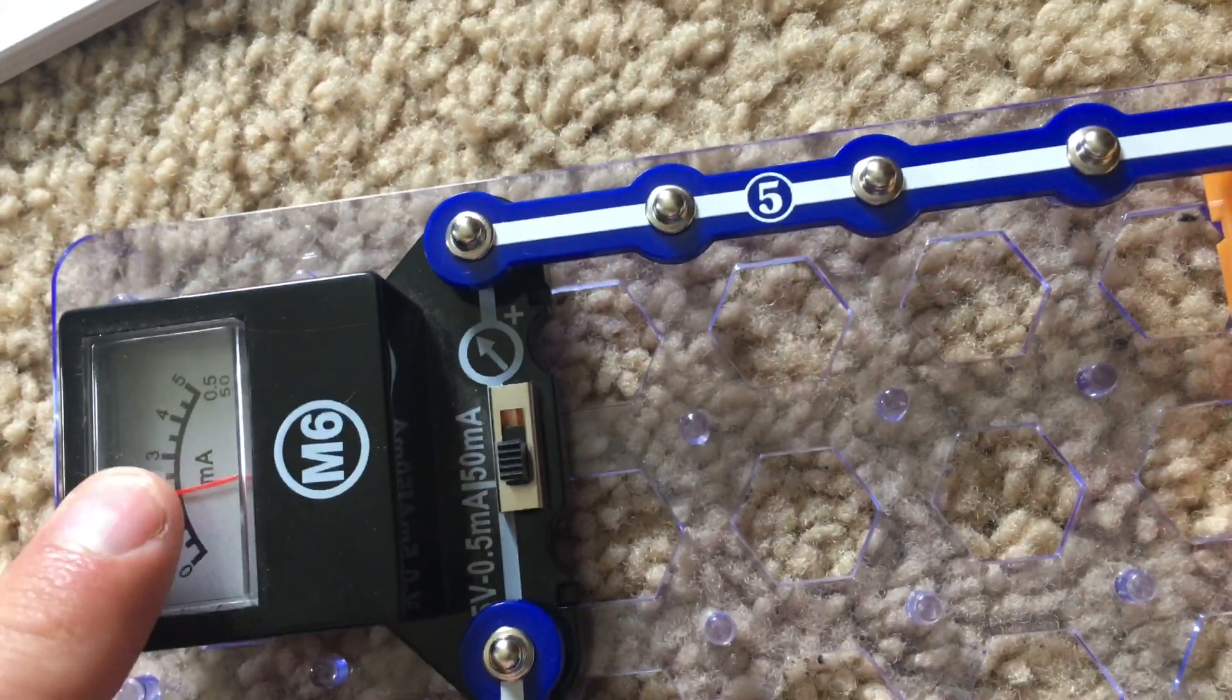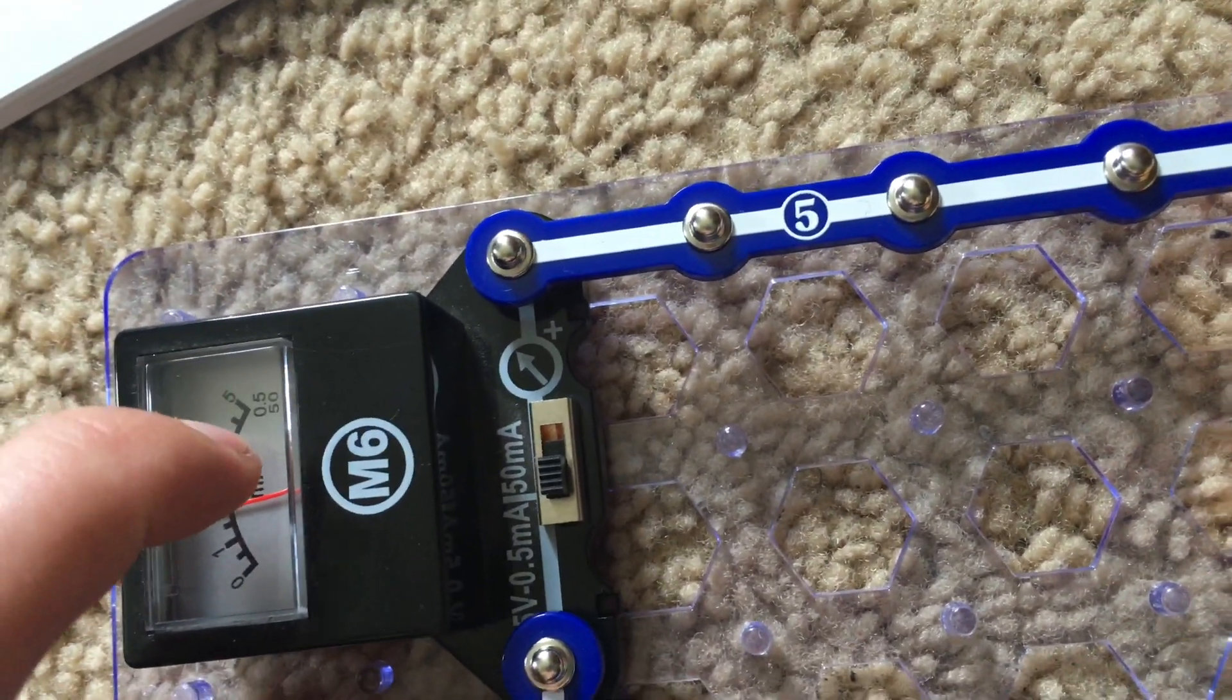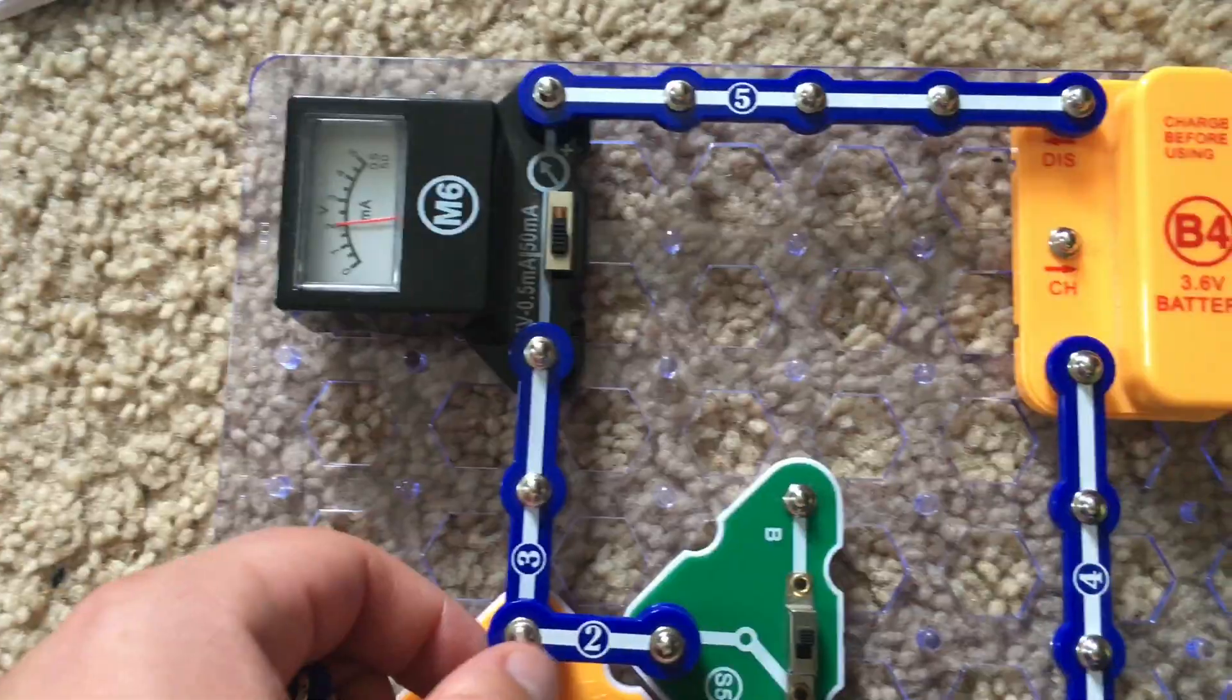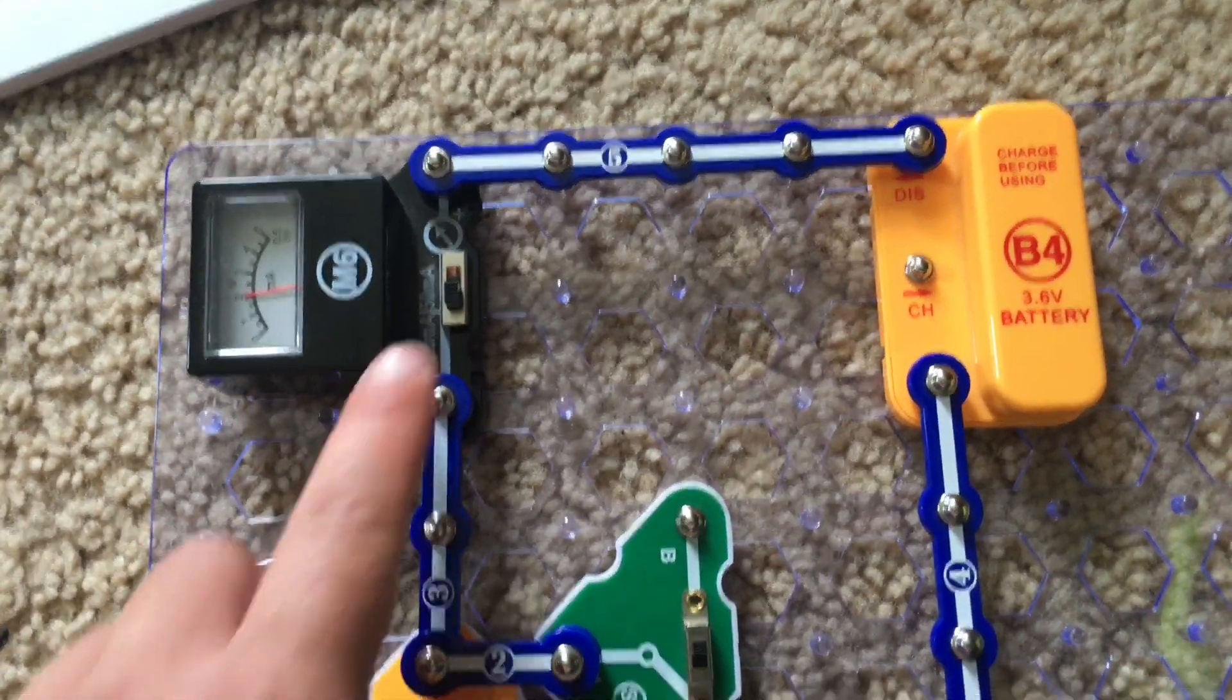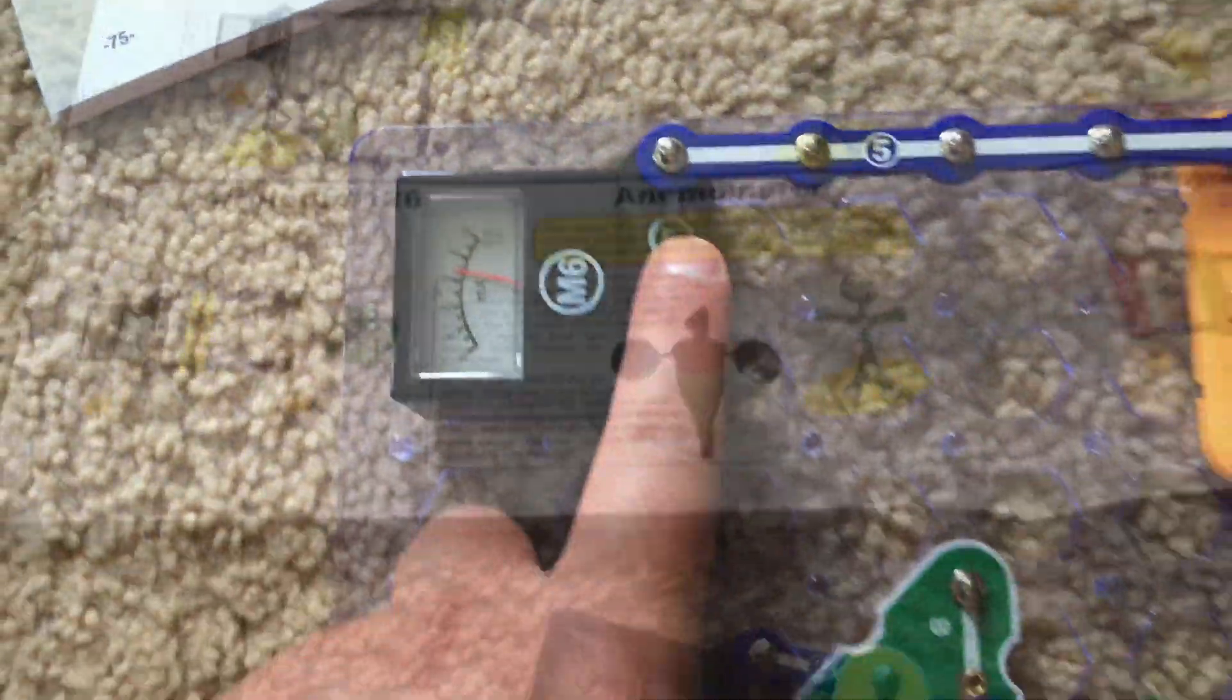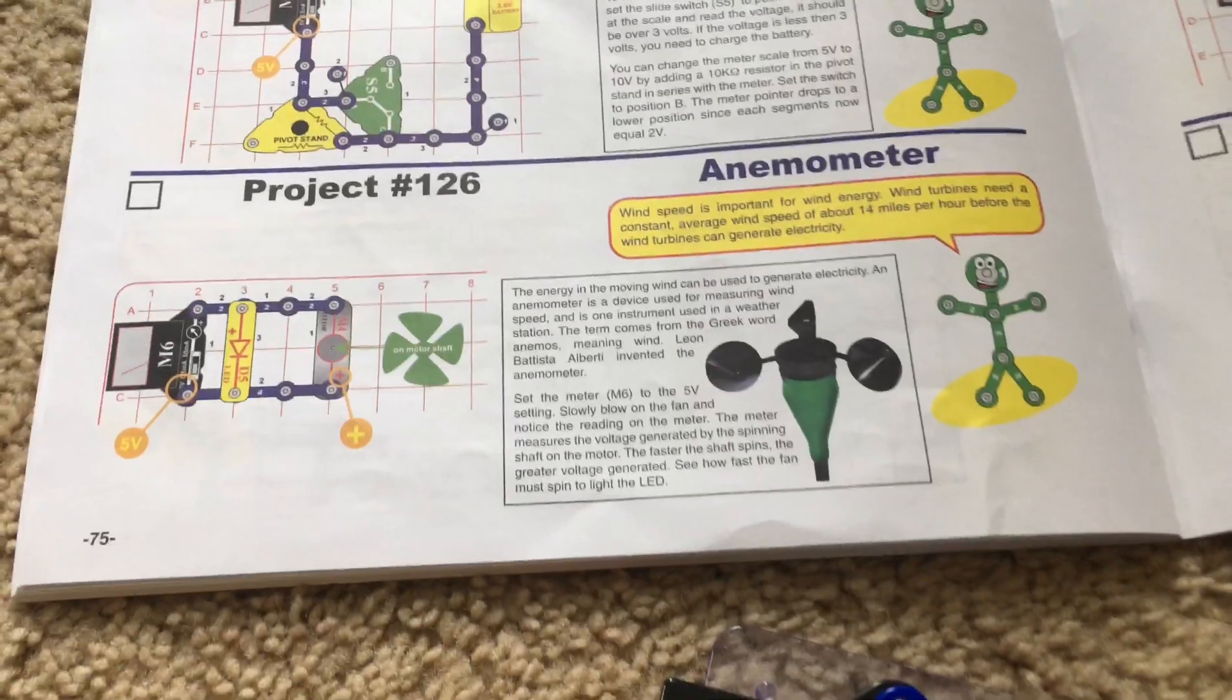The meter is connected in parallel between the two points where measurement is to be made. Because it has a high resistance, very low current flows through it, only 0.3 milliamps.